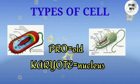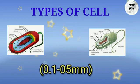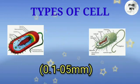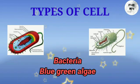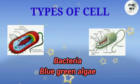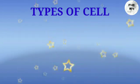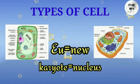In a prokaryotic cell, the nuclear envelope is not present and nucleolus is also not present. Cell size varies between 0.1 to 0.5 micrometers. Some examples are bacteria and blue-green algae.